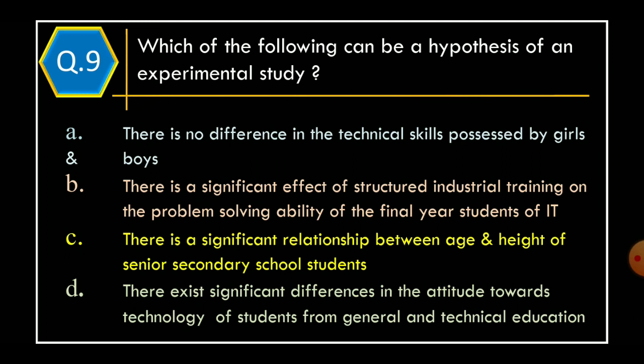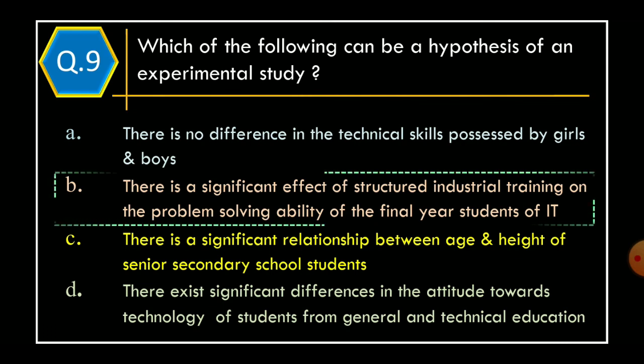Option C: there is a significant relationship between age and height of senior secondary school students. Option D: there exist significant differences in the attitude towards technology of students from general and technical education. And correct option is Option B: there is a significant effect of structured industrial training on the problem solving ability of the final year student of IT.